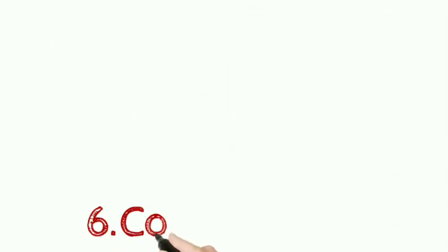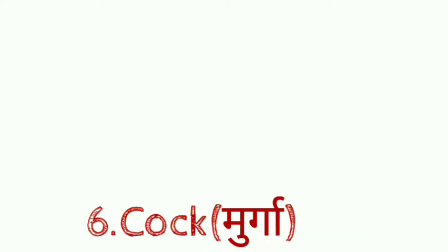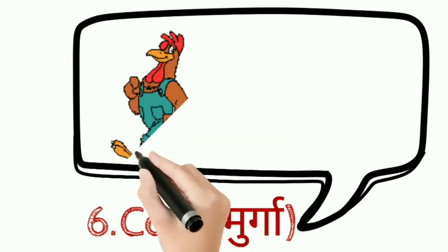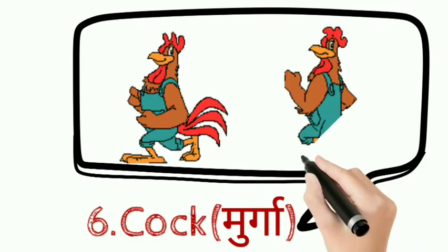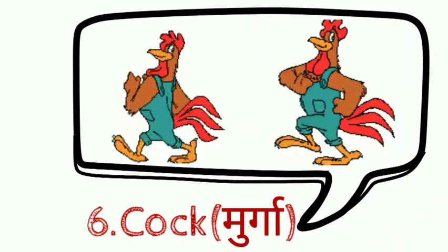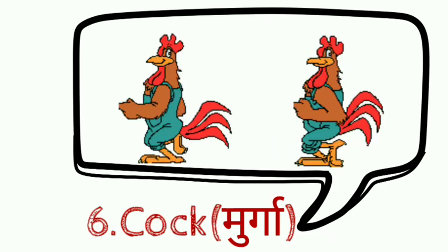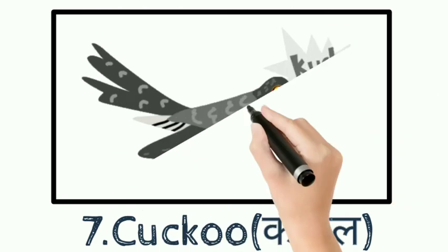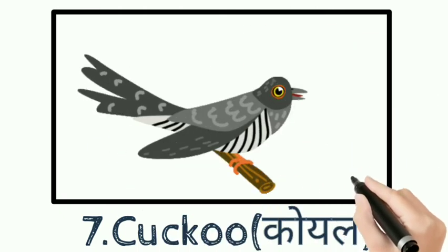Sixth: Cock, C O C K. Cock means murga. Seventh: Cuckoo, C U C K O O. Cuckoo means koa.